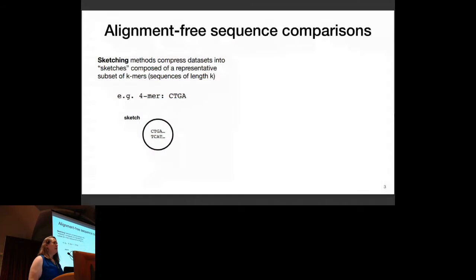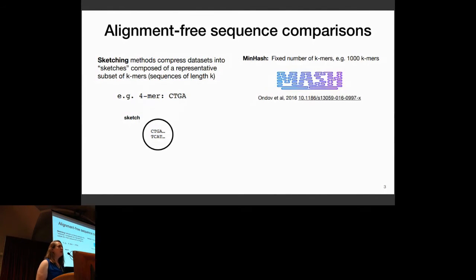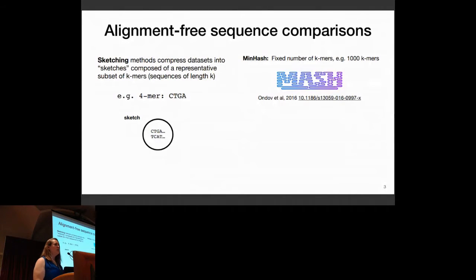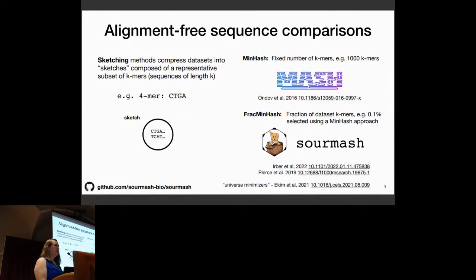To get around that, we turn to alignment-free sequence comparisons using K-mers. K-mer sketching methods compress data sets into subsets of representative K-mers that represent the data set. I'm going to talk specifically about two sketching methods: minhash, which uses a bottom sketch approach to select a fixed number of K-mers — for example, 1,000 or 10,000 K-mers per data set — and fragment hash, which instead selects a fraction of data set K-mers, such as 0.1% of data set K-mers. This has some neat properties that allow us to do some different things.